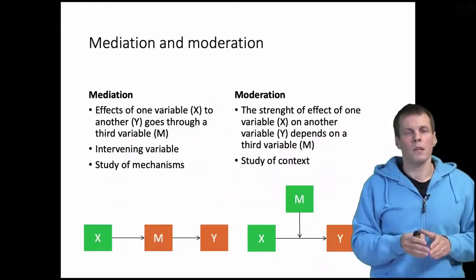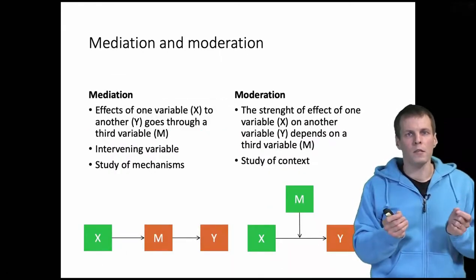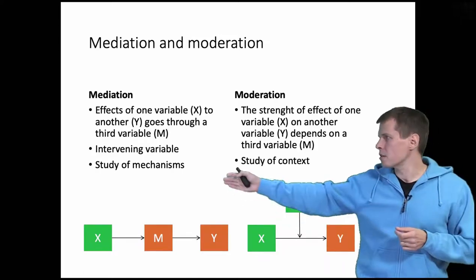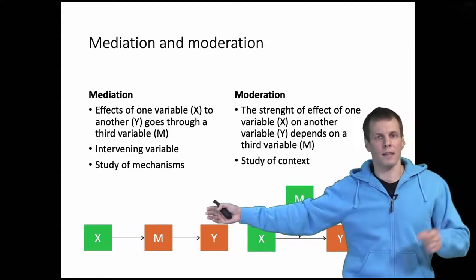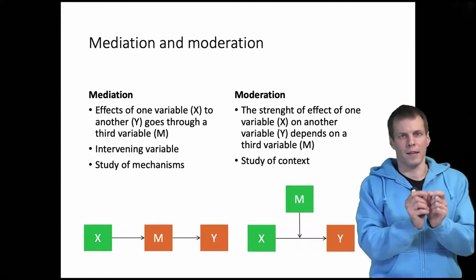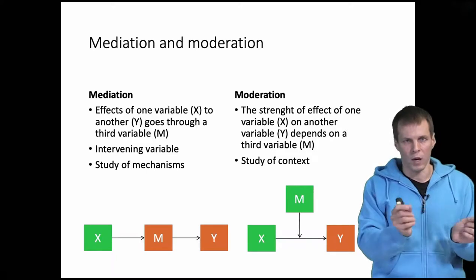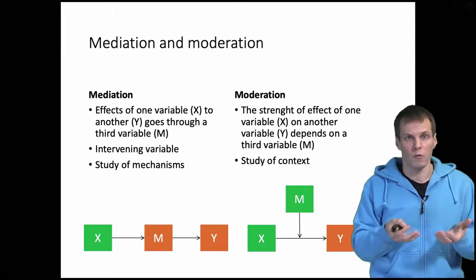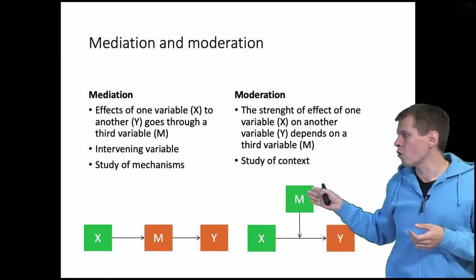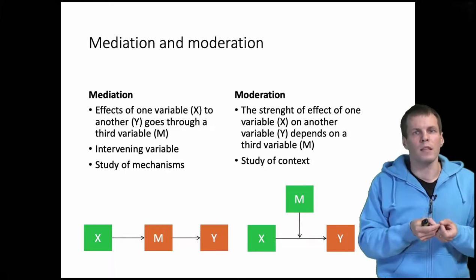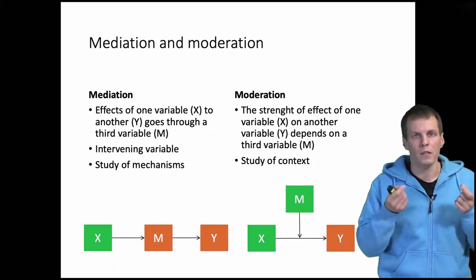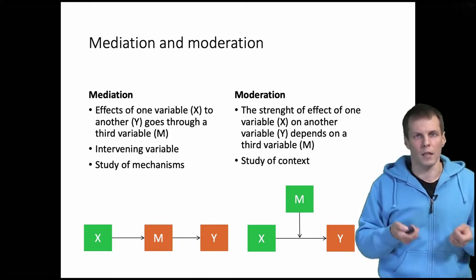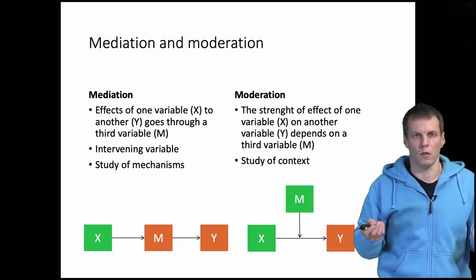Okay, to summarize, mediation and moderation are two ways of analyzing relationships that are about three variables. Mediation is the study of mechanism. Is there a variable that sits in between? That is a step in the causal path from x to y, and that allows us to study mechanisms. Singleton and Straits use the term intervening variable for this kind of model. Then we have moderation, and moderation means that the effect of x on y depends on the third variable. This kind of model is useful because it allows us to study context. When does an effect occur? When does it not occur?